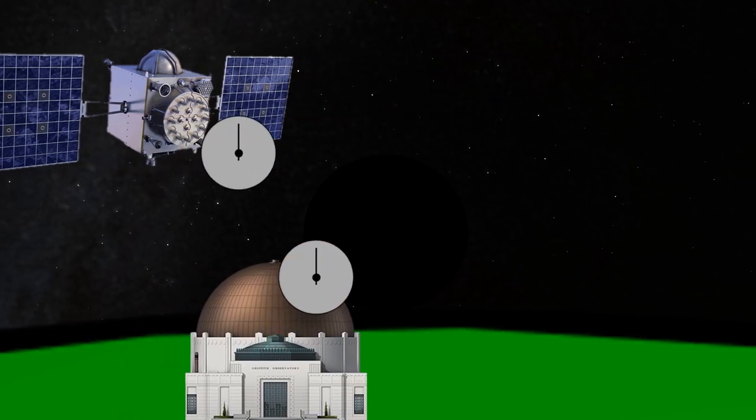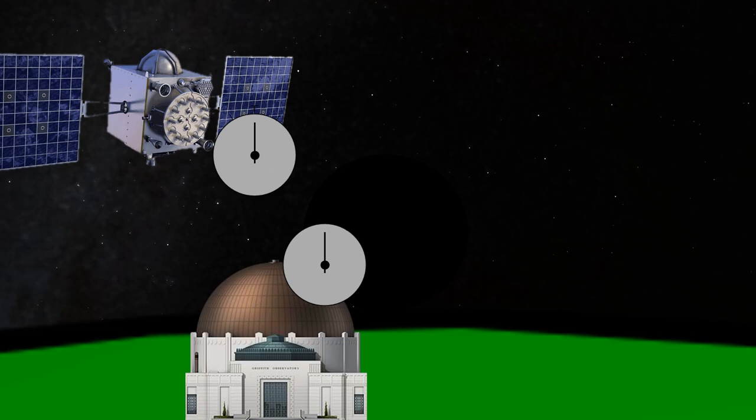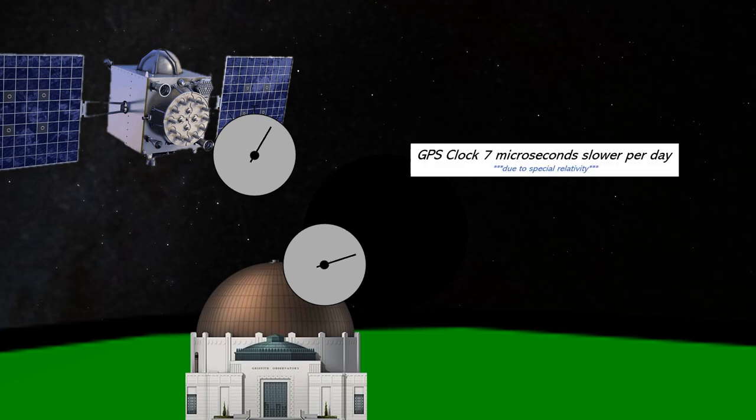It turns out that the effect of time dilation, as it's called, as a result of the relative motion of the satellite, causes its clock to appear to us to run 7 microseconds slow every day. We've demonstrated an example of time dilation in what's known as special relativity.